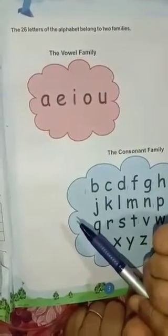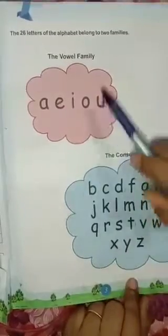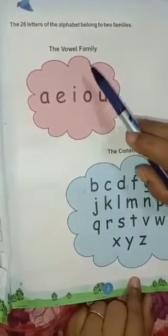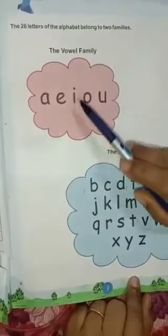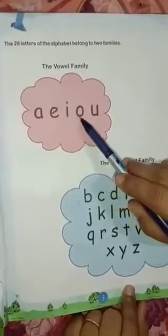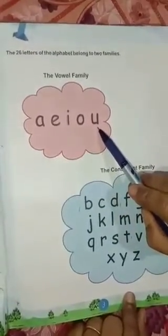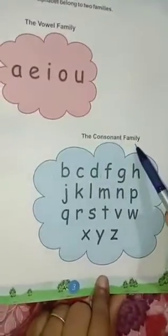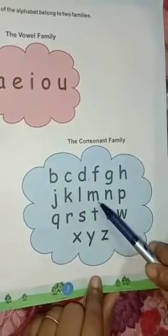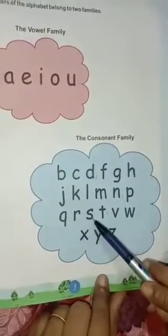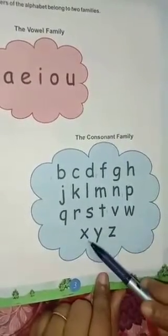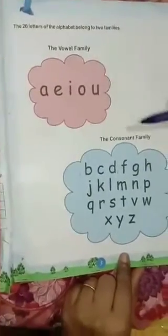We will now learn about the families of the English alphabet. We have two families: the vowel family — A, E, I, O, U — and the consonant family — B, C, D, F, G, H, J, K, L, M, N, P, Q, R, S, T, V, W, X, Y, Z. So we have two families: the vowel family and the consonant family.